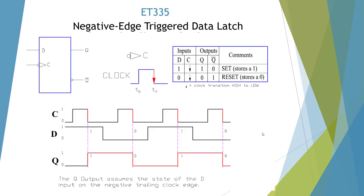Here I'm showing a negative-edge device. We have our arrow, which means edge, and here's our little bubble on the end — that means negative edge. So we're interested in the high-to-low transition, the negative edge. We're only interested in what's going on at that negative edge.